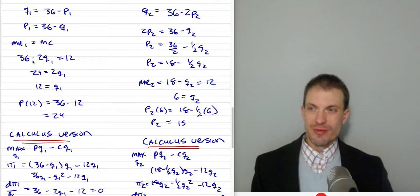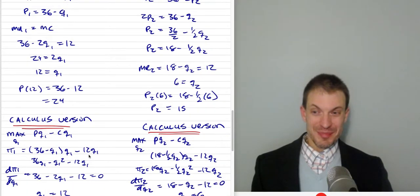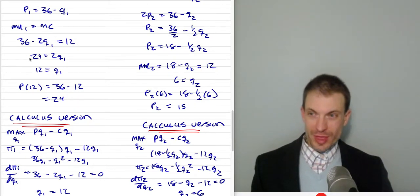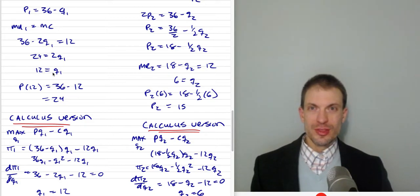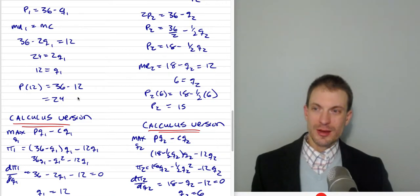So marginal revenue one is 36 minus 2Q1, set equal to marginal cost of 12. Moving terms: 24 = 2Q1, so Q1 = 12. The quantity this firm sells in segment one is 12. For the associated price, we evaluate the inverse demand at Q1 = 12 and get a price of 24.